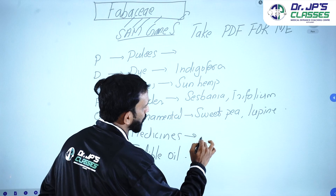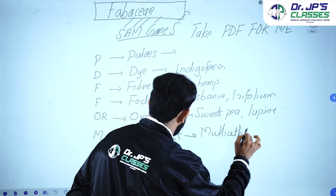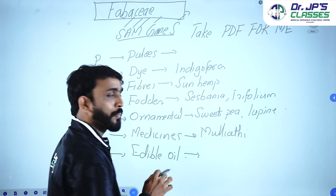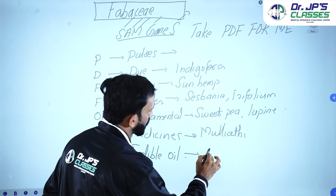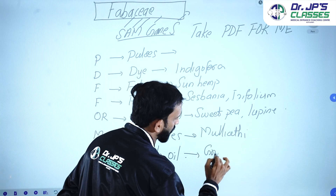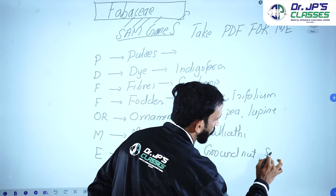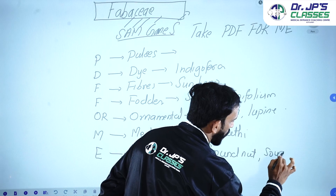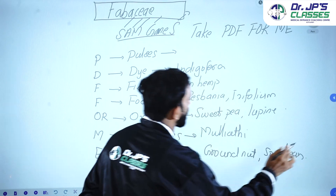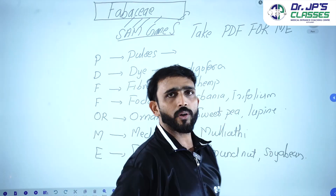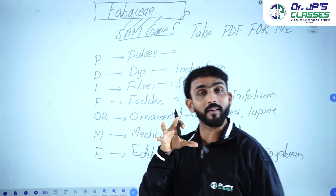Medicinal plants include Mulyathi. Mulyathi is a medicinal plant. For Edible Oil, the sources are Groundnut and Soybean. Soybean is also classified under Pulses. These are the plants and the family's economic importance.